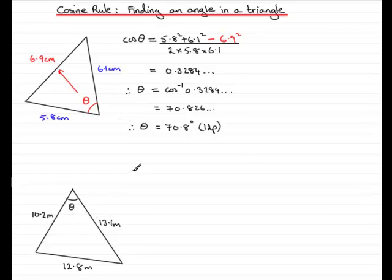Cosine theta, first of all, equals the sum of the squares of the two sides that surround the angle. It's these two sides that are adjacent to the angle here. It's going to be 10.2 squared plus 13.1 squared, or 13.1 squared plus 10.2 squared. Then we need to subtract the square of the side opposite the angle, so that's going to be the 12.8, minus 12.8 squared.